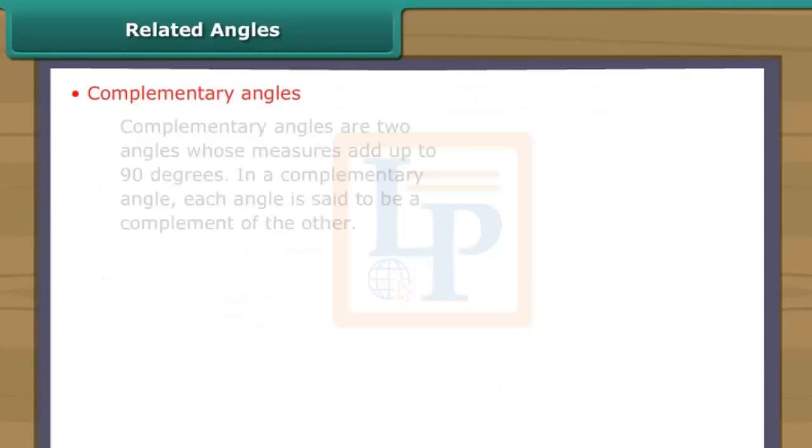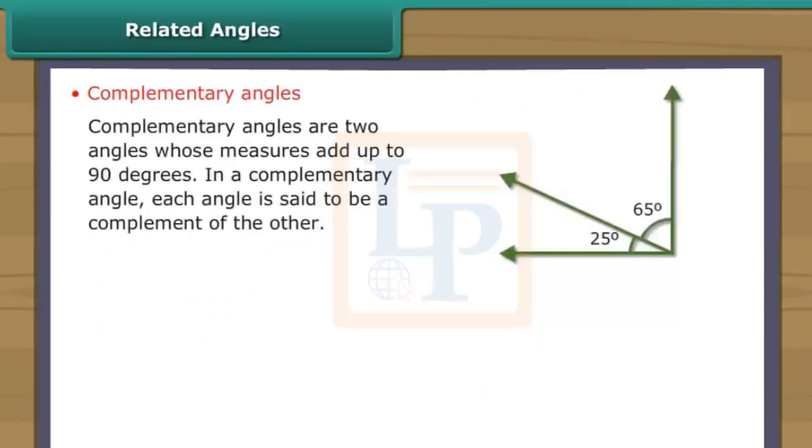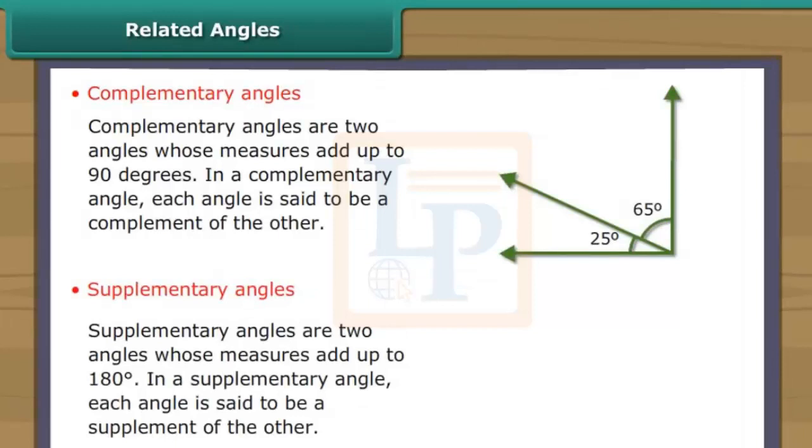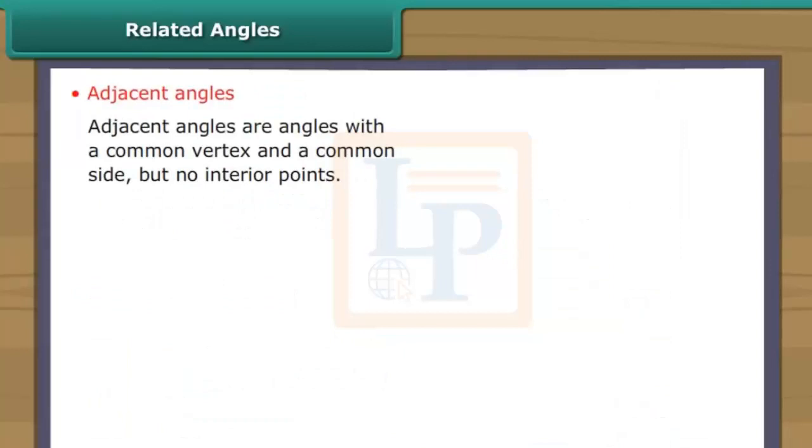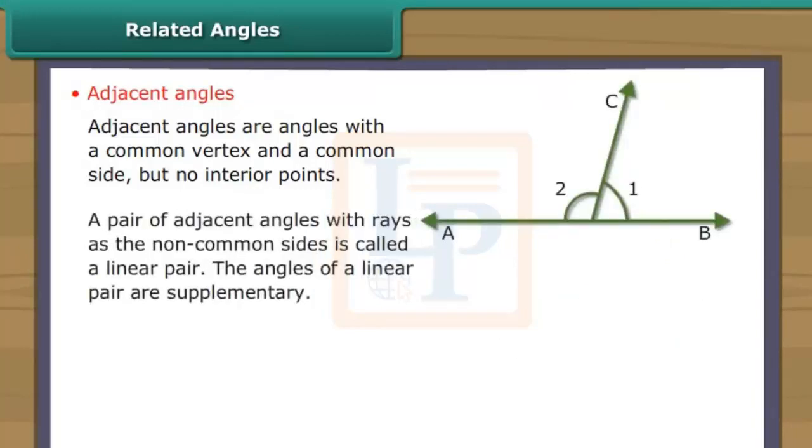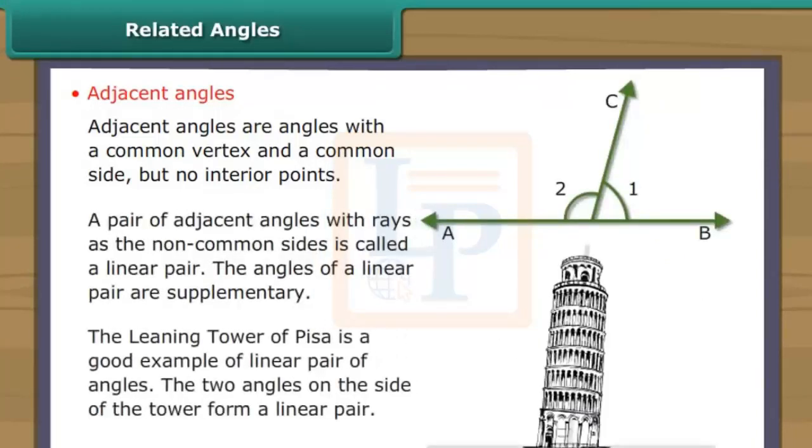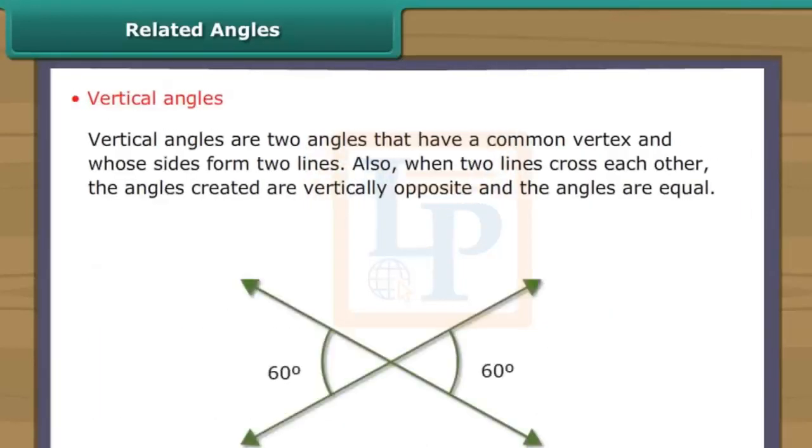Complementary angles are two angles whose measures add up to 90 degrees. Supplementary angles are two angles whose measures add up to 180 degrees. Adjacent angles are angles with a common vertex and a common side but no interior points. A pair of adjacent angles with rays as the non-common sides is called a linear pair. Vertical angles are two angles that have a common vertex and whose sides form two lines.